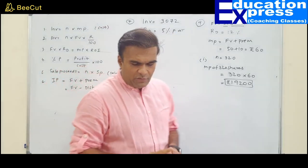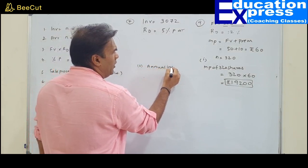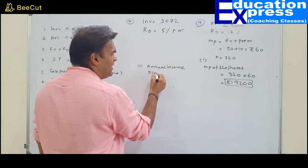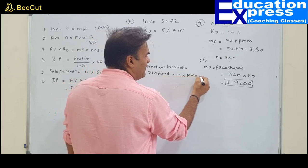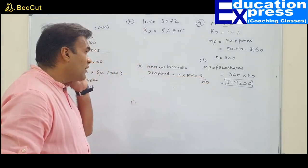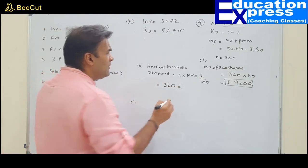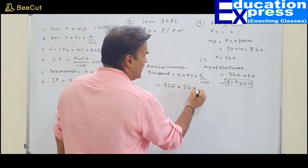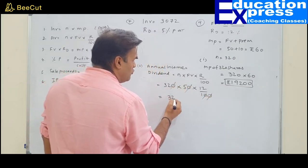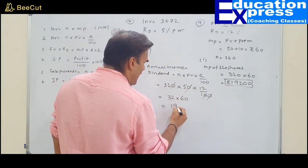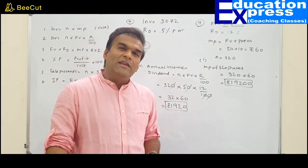Second part — annual income: dividend = number of shares × face value × rate ÷ 100 = 320 × 50 × 12 ÷ 100. Simplifying: 32 × 60 = 1,920. Annual income is Rs. 1,920.